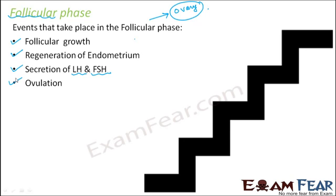It is important to understand that this is all cyclic. Ovulation happens after 14 days, then menstruation happens, and once menstruation is done it is followed by ovulation again. So it is a cyclic process — nothing is strictly before or after. When you consider menstruation as the first step, ovulation comes after it. It is like saying three colors are red, green, blue — whichever you call first determines what comes next in a cycle.